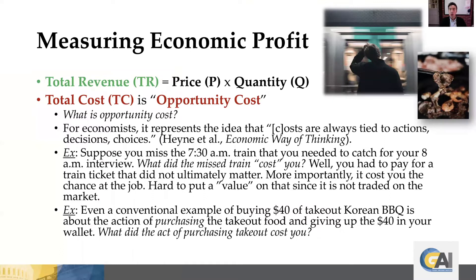So how do we measure economic profit? Total revenue is simply the product of the price you can get for your product times how much you sell — very intuitive. Total cost is what we consider opportunity cost. Outside of economics, nobody really uses this term, but it's a very important concept because it's capturing the full cost of certain types of behaviors and activities.